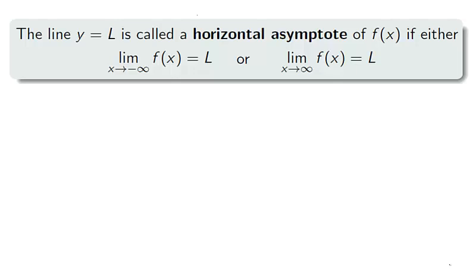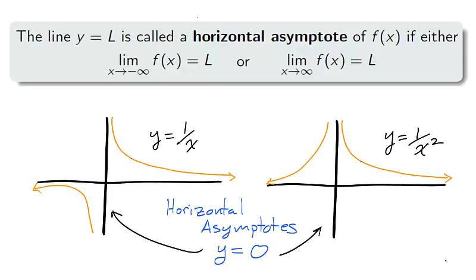If a limit at infinity for a function is finite, we see that the function has a horizontal asymptote at that value. That is, if the limit as x approaches negative or positive infinity equals L, then the line y equals L is a horizontal asymptote for the function. The functions 1 over x and 1 over x squared have horizontal asymptotes at y equals 0.